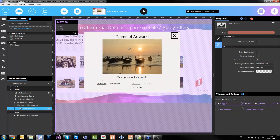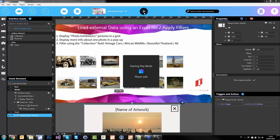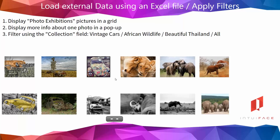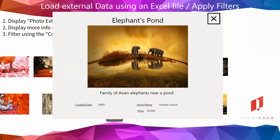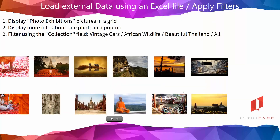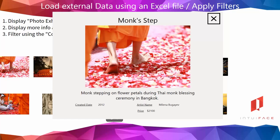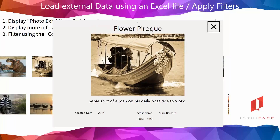Now the pop-up is ready with the correct information. I just need a final action to move my pop-up into my scene. Saving my work and hitting play to test it. I can scroll the collection — I have all the pictures from the three collections: vintage cars, African wildlife, and Thailand pictures. If I click on one of them, that's the Elephant's Pond — it brings the image with the description, creation date, artist name, and price. I can close the pop-up, it goes out of the scene again. Select another one: the Bangkok Sunset with new description, creation date, artist, price. Five texts and the image are updated automatically — just one trigger on the template, and it applies to all images from my data source.